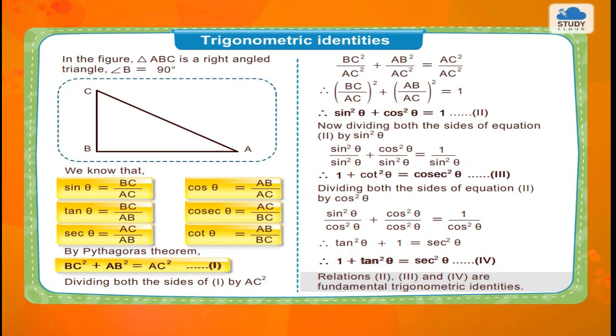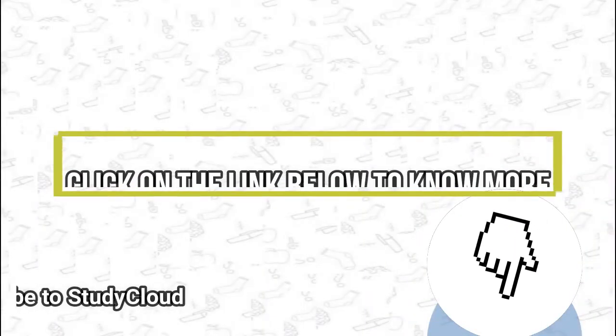Relations 2, 3, and 4 are fundamental trigonometric identities.